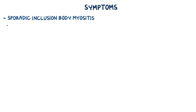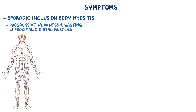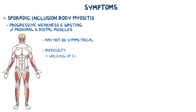Symptoms of sporadic inclusion body myositis include progressive weakness and wasting of proximal and distal muscles, especially involving the quadriceps, the wrists and fingers, and the muscles that lift the front of the foot. The weakness may not be symmetrical, and it can cause problems like difficulty climbing stairs and manipulating fingers. In severe cases, the muscles of the pharynx or esophagus are involved, which can cause dysphagia, or difficulty swallowing.